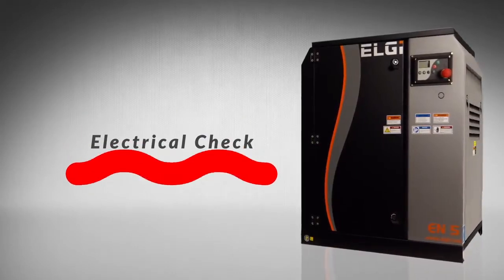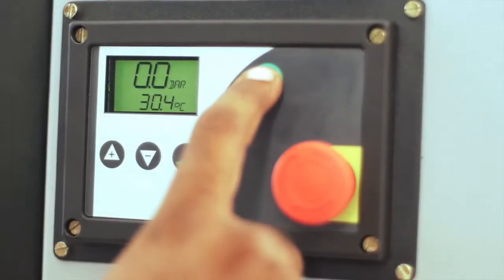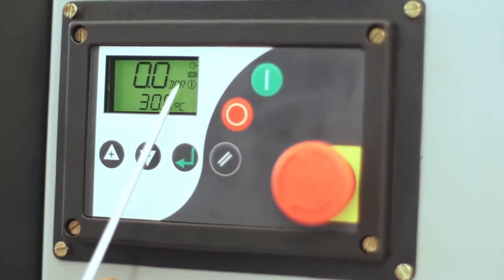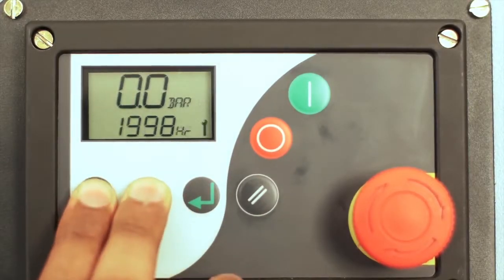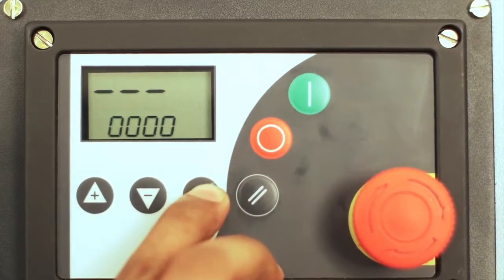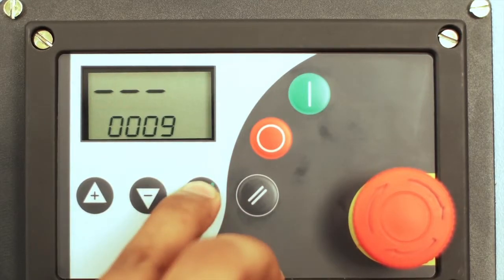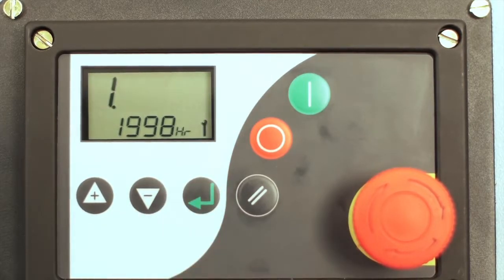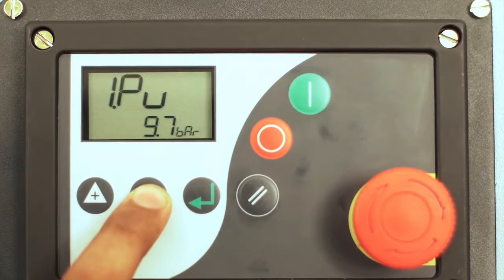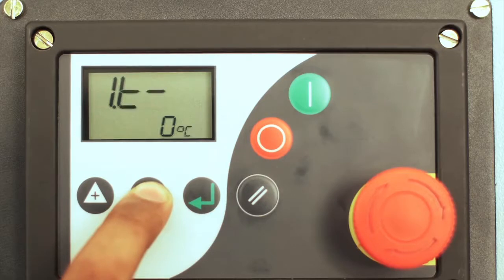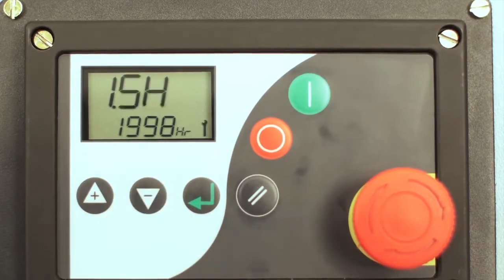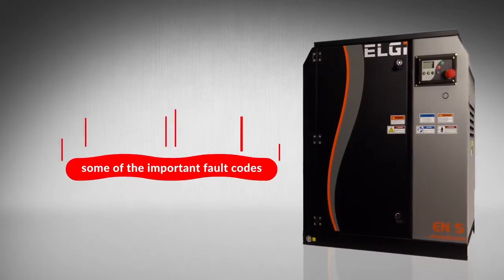Check the various stages of the compressor such as standby, running, and loading in the display screen of the controller. Enter the password 0009 to enter into the operator menu. A total of nine parameters such as service interval of filter replacements, load and unload pressure, and temperature are shown in the operator menu.